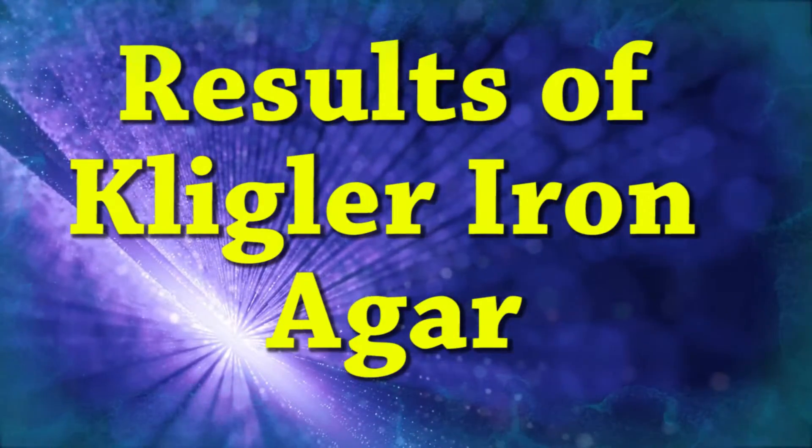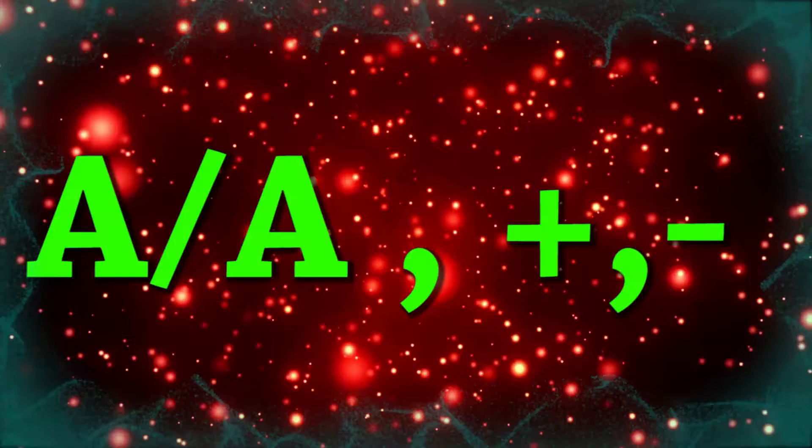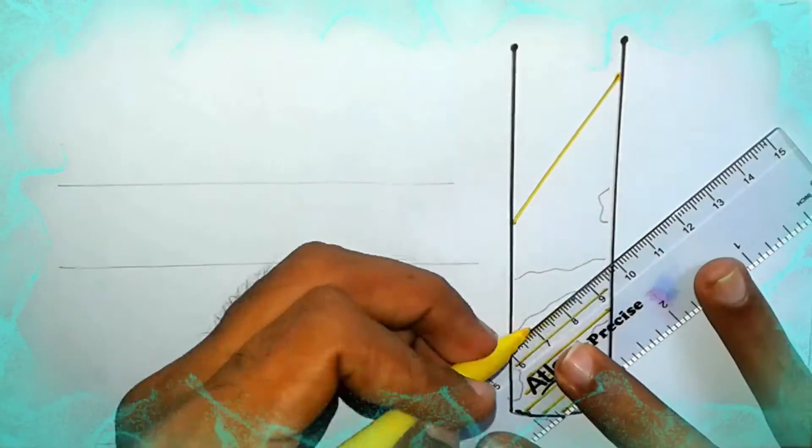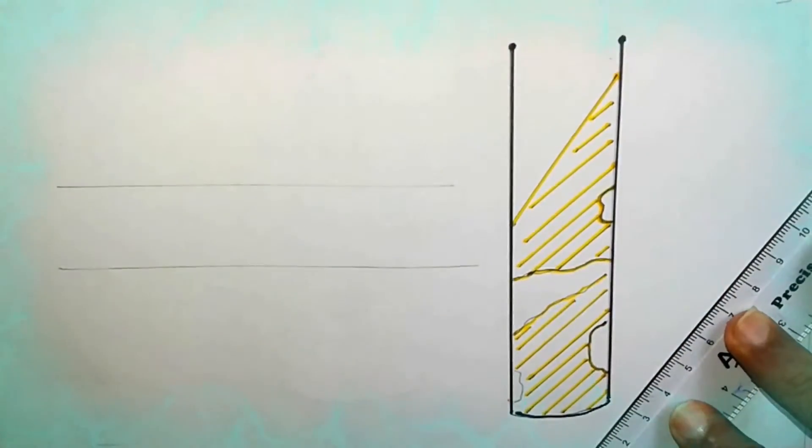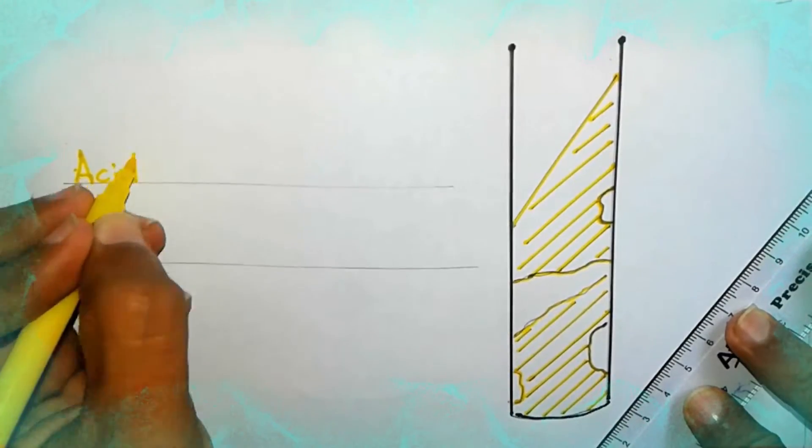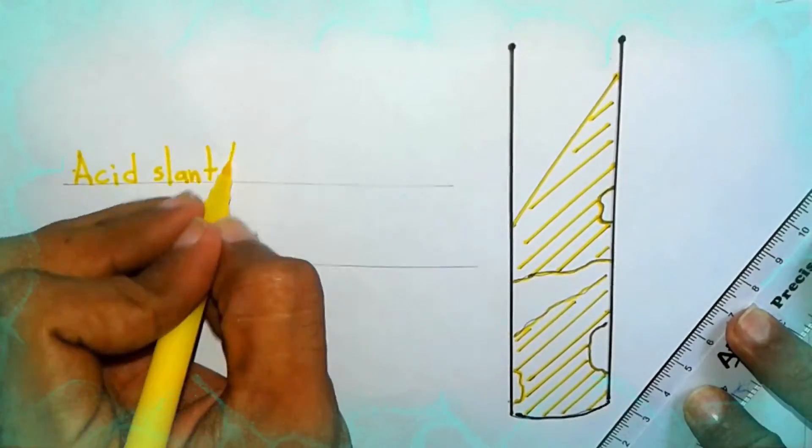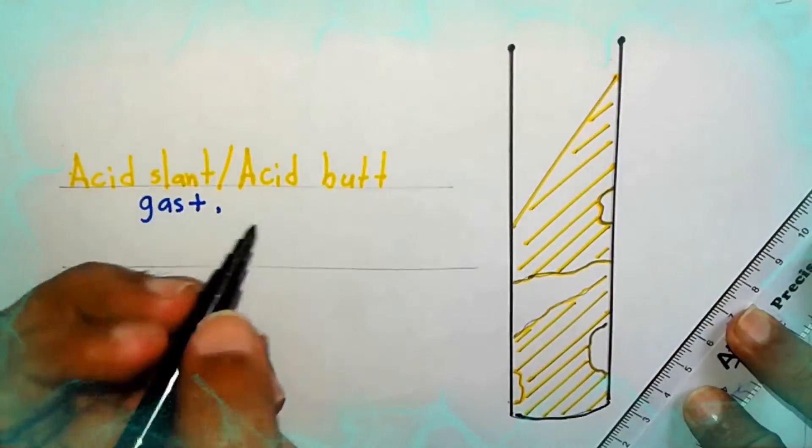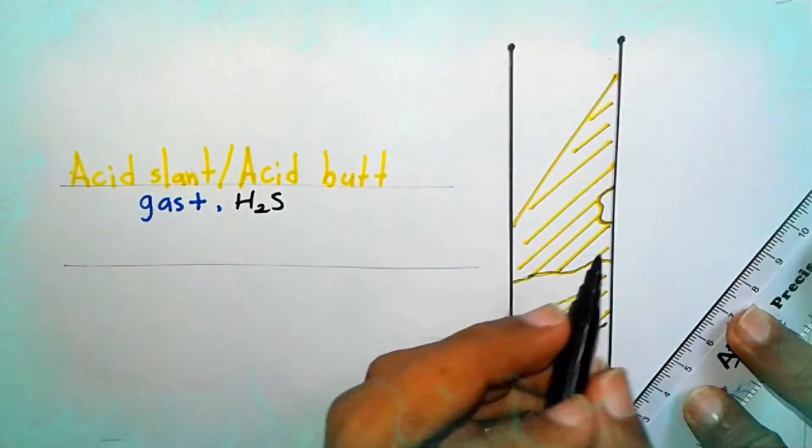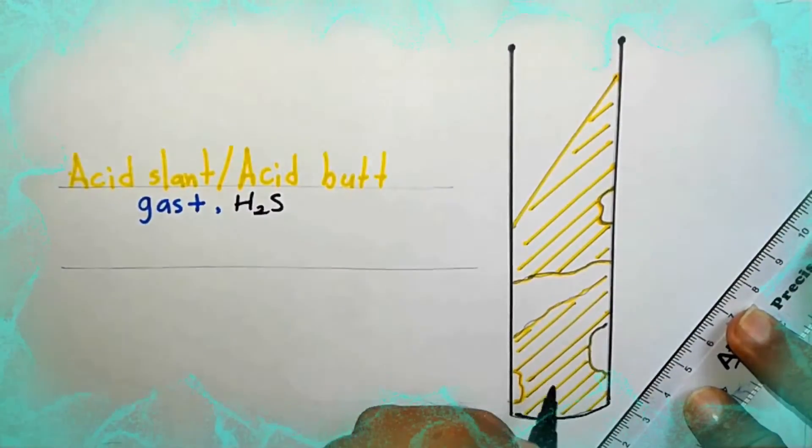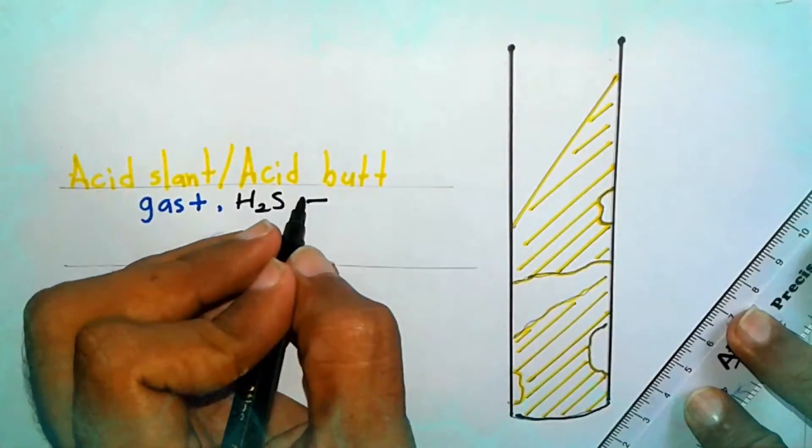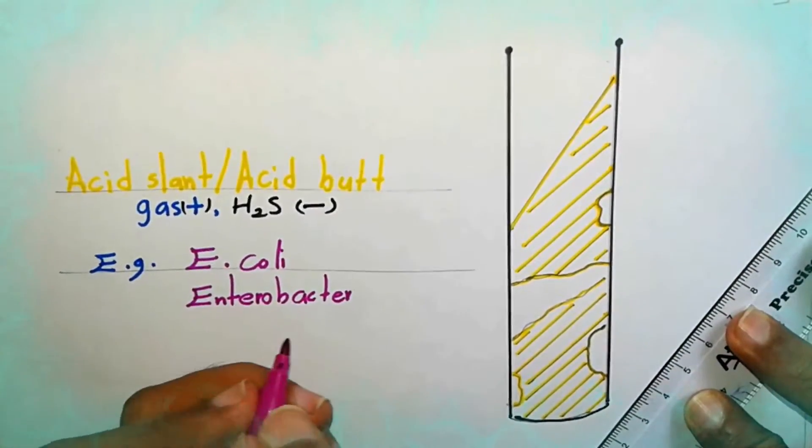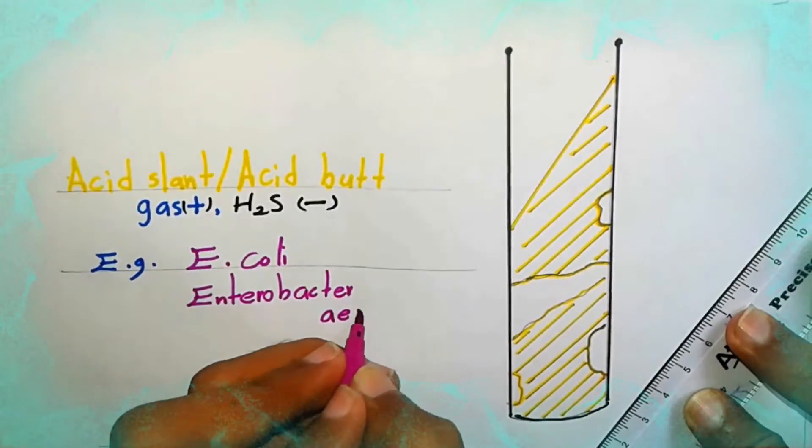Results of KIA patterns. You can see in this KIA tube Acid slant and acid butt, Gas positive and no H2S production. Examples: E.coli and Enterobacter aerogenes.